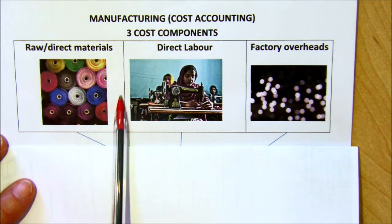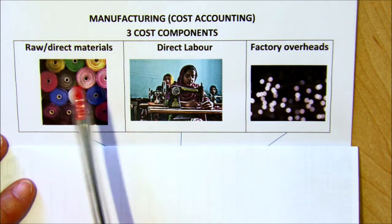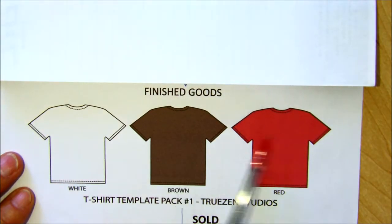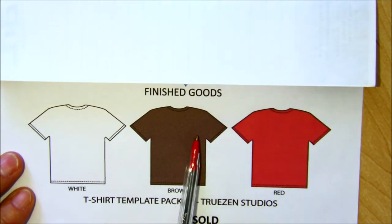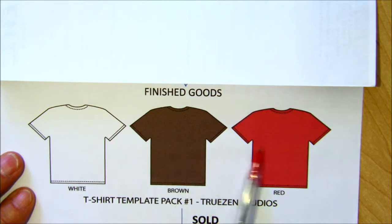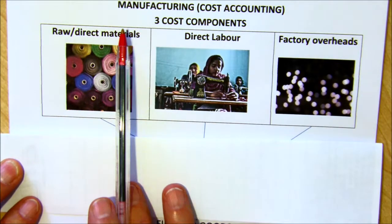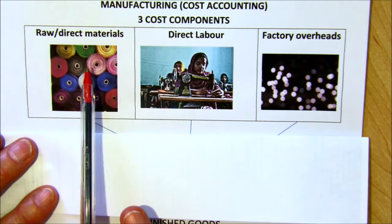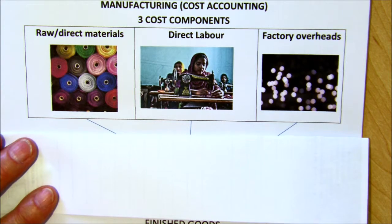First of all there's your raw materials that are required. So if we were for example going to make t-shirts, we would need material — we'd need cotton, we might need labels and so on that have to be put onto these t-shirts. That would all consist of the raw materials or the direct materials, direct because they're directly involved in your goods.